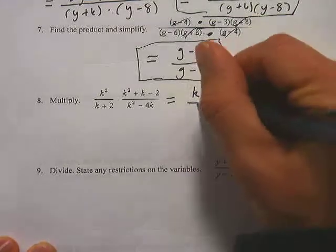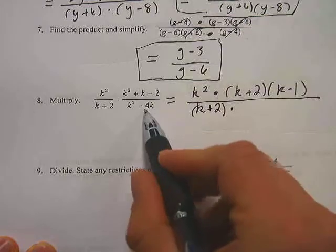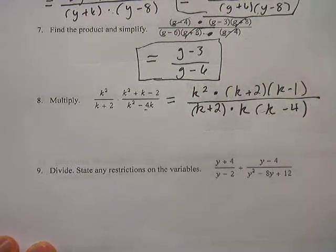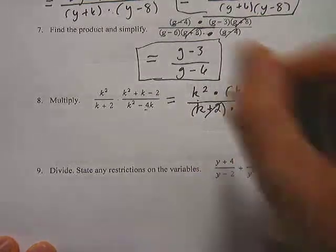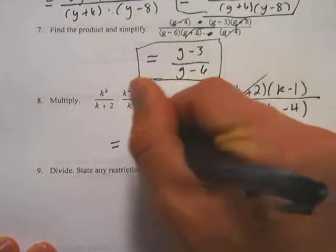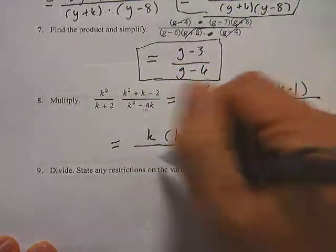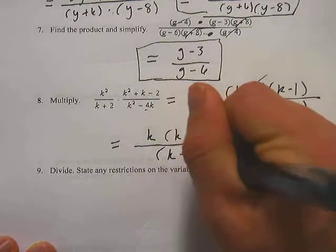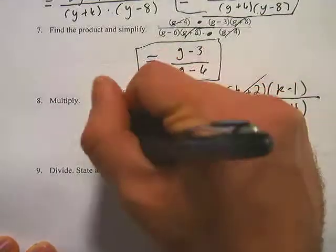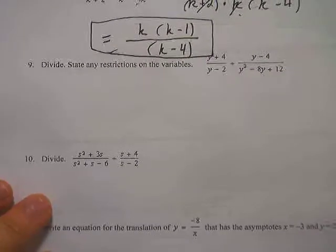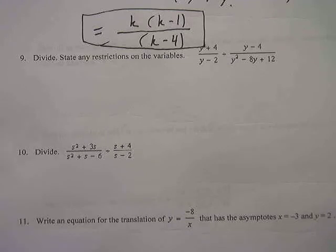This multiplication problem is the same — I'm just going to factor some stuff first. I get k squared times k plus 2 times k minus 1 over k plus 2 times k, factoring out the greatest common factor of k, times k minus 4. The k plus 2s cancel out. I have two k's on top and one on the bottom, so one cancels, leaving k times k minus 1 on top and k minus 4 on the bottom. That is the answer.